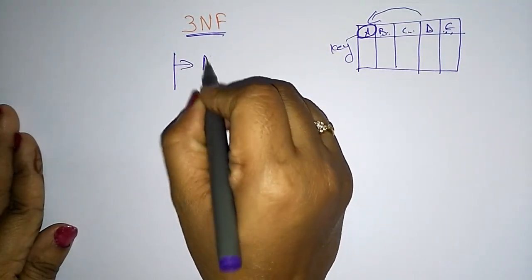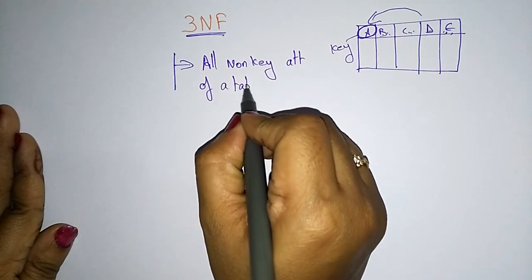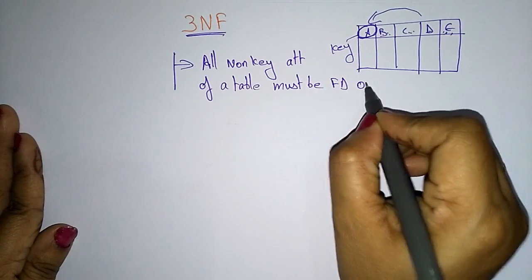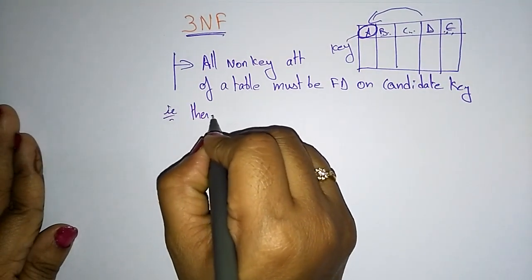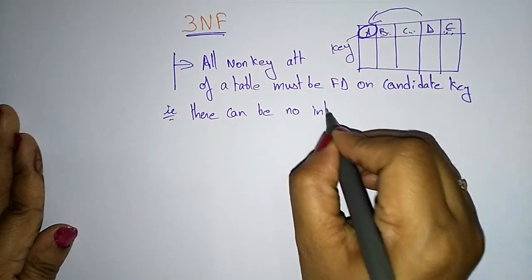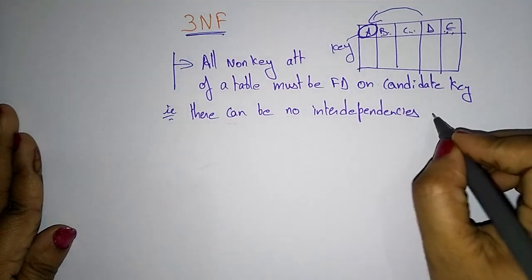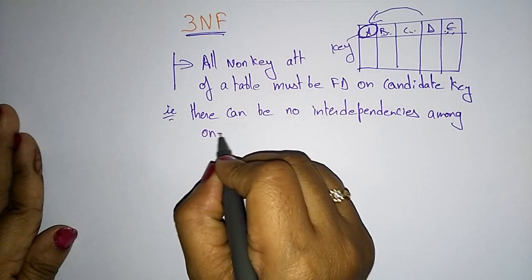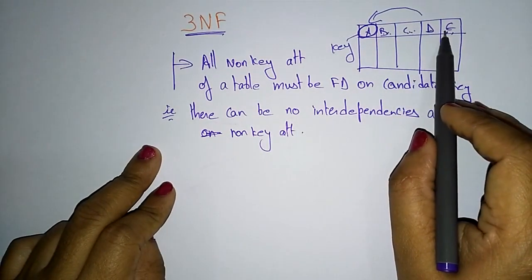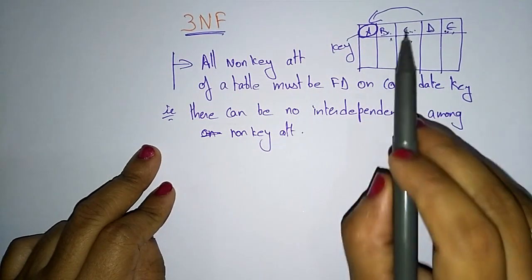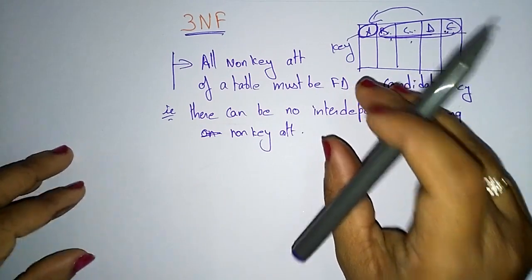All non-key attributes of a table must be functionally dependent on the candidate key - that is, there can be no interdependencies among non-key attributes. There can be no interdependency among non-key attributes; only all non-key attributes must be functionally dependent on a candidate key.